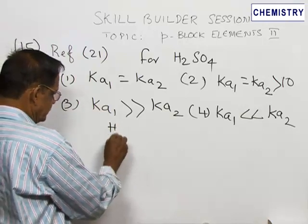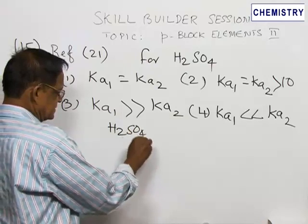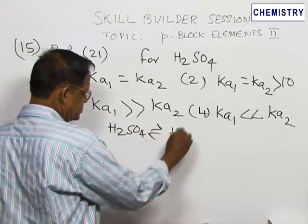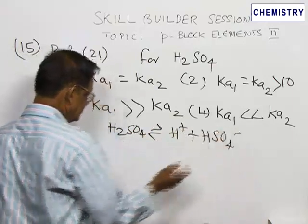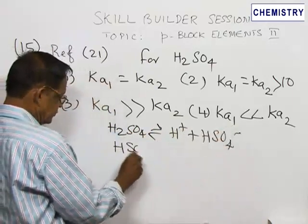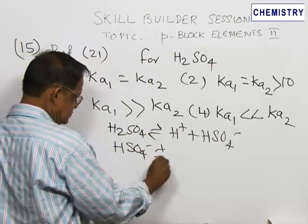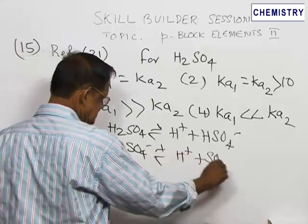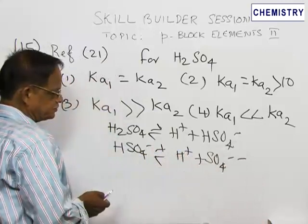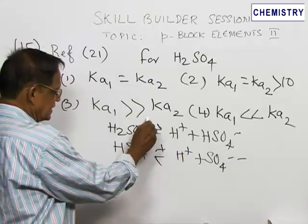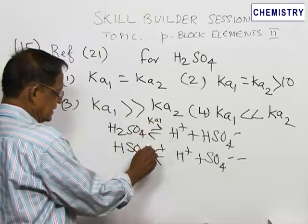Sulfuric acid, as I told you, ionizes to give H+ and the HSO4- ion. HSO4- dissociates to give H+ and the SO4^2- ions. This is Ka1 and this is Ka2.